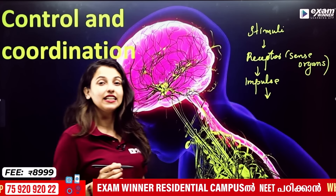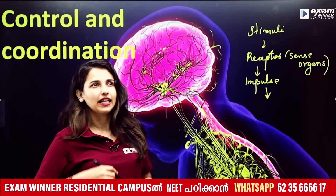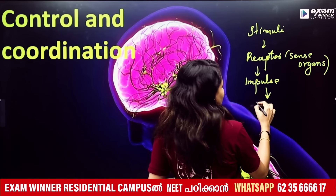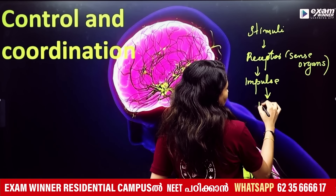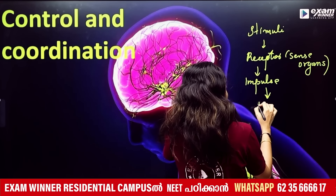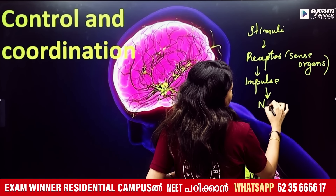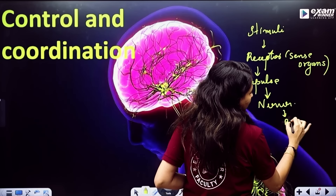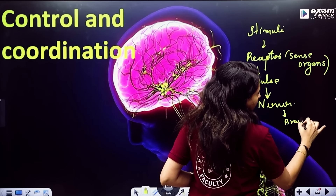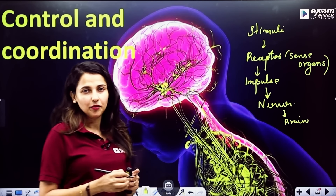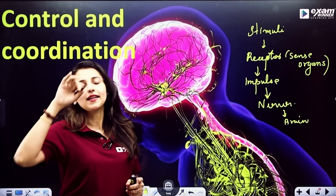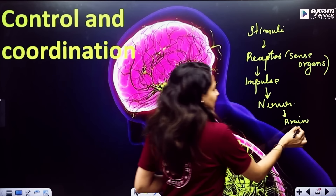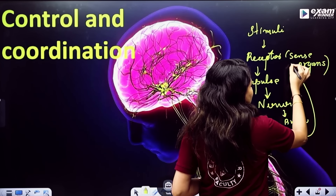We are going to talk about neurons. Whenever we want to talk about the nerves and the brain, the brain communicates messages with our receptors in our fingers, hands, and arms.